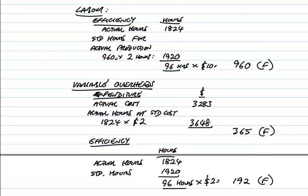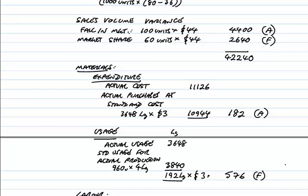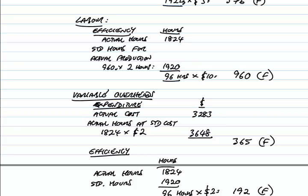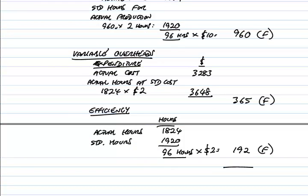Let's just add up and finish the statement. We've got the contribution so far of 42,240. Adding and subtracting the variances: minus 182 plus 576 plus 960 plus 365 plus 192 comes to 44,151. That should be — and it is — the actual contribution, so it does check, which is quite nice. If it didn't check in the exam, don't waste time going back through all your arithmetic. In all probability it's just one silly mistake somewhere.